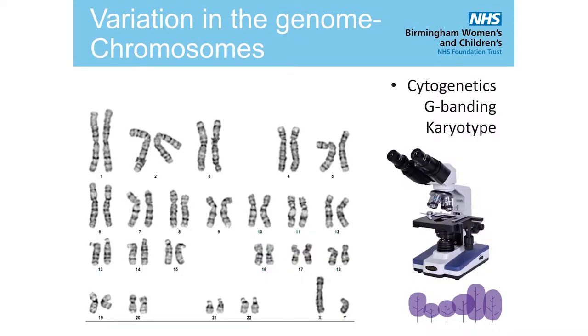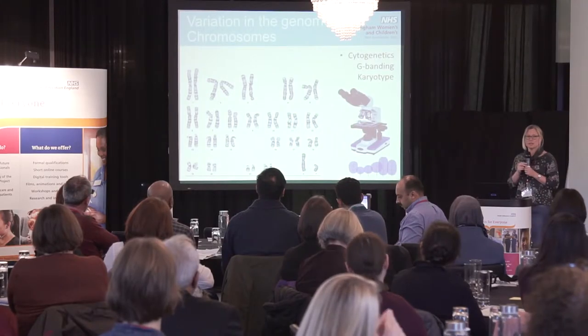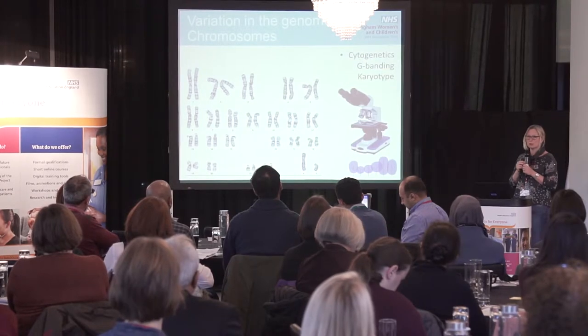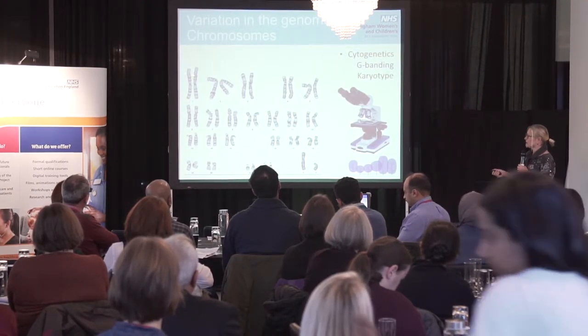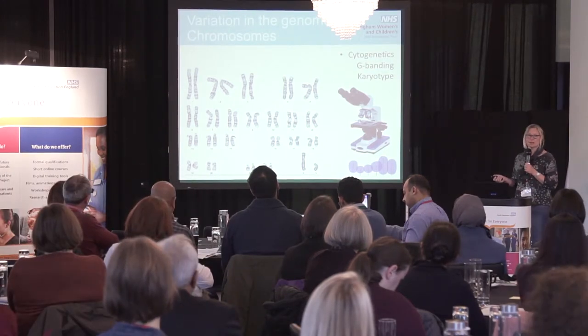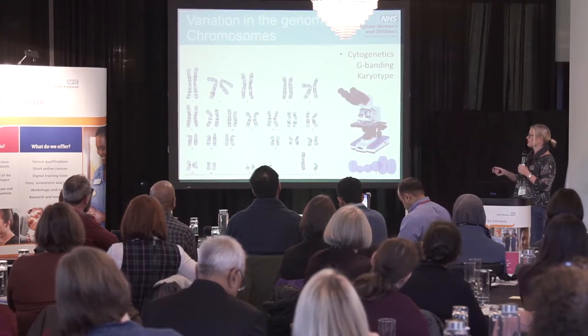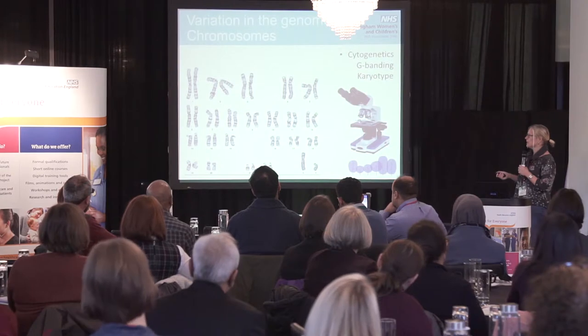This is what chromosomes look like down the microscope. We can look at these via a technique called cytogenetics. You're looking at a cell arrested in a particular stage of the cell division cycle called metaphase — the point at which chromosomes are most condensed and easiest to see. The cell is burst open to reveal the chromosomes, and they've been stained with specific chemicals which reveals a very particular banding pattern. The chromosomes are then paired up and ordered in what we call a karyotype.